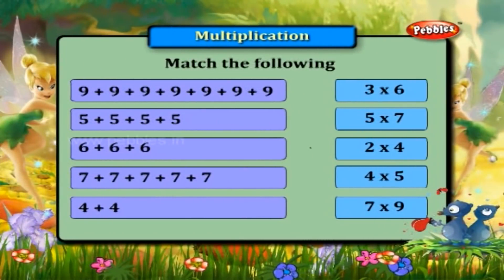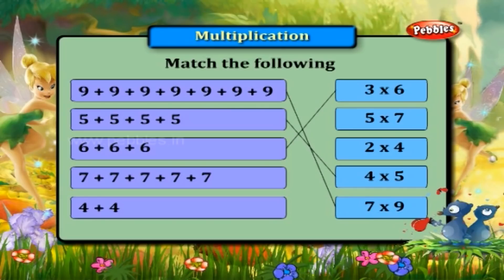Match the following. Nine plus nine plus nine plus nine plus nine plus nine plus nine is equal to seven into nine. Five plus five plus five plus five is four into five. Six plus six plus six is three into six. Seven plus seven plus seven plus seven plus seven plus seven is equal to six into seven. Four plus four is equal to two into four.